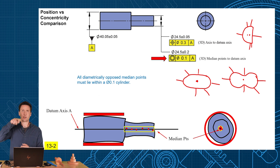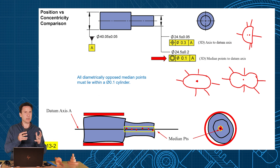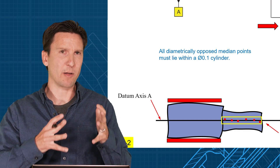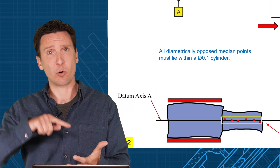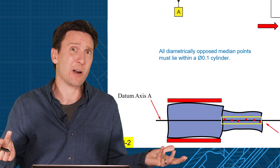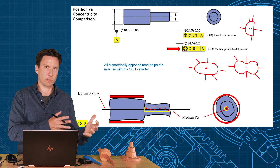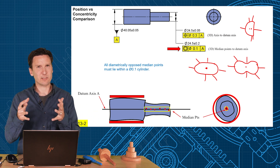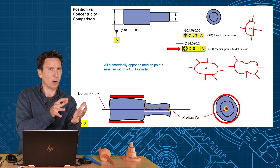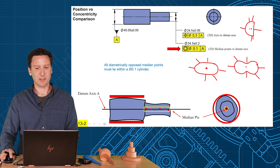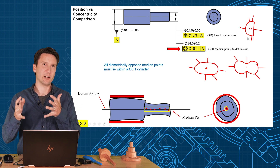Position says it doesn't care — it's just going to grab the highest points. So the opposed median points of each cross section is the defining concept for concentricity. It's kind of a funky one. I haven't found a lot of good applications for where to use this symbol. Usually you want the axis to be centered on something — that's position. Or you want to control the surface relative to the axis — that'd be runout. Runout controls form with coaxiality; position doesn't control form with coaxiality. Concentricity has this weird in-between where it controls some form but not all form — it allows oval and peanut shape, just not the D-shape, because that's oblong in an unsymmetric way.